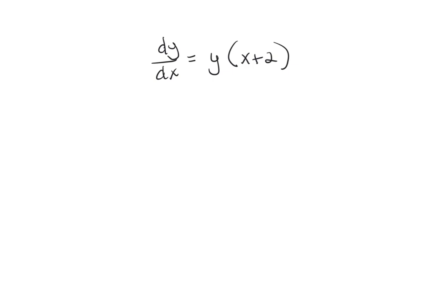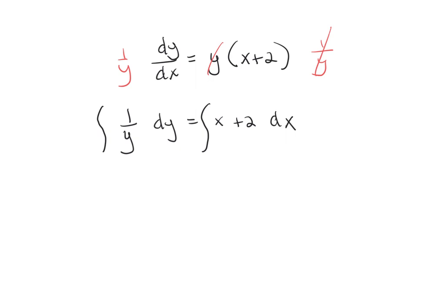We want to separate those variables. Move the y to the left by dividing by y, which is the same as multiplying both sides by 1 over y. Then multiply both sides by dx as well. So we get 1 over y dy equals x plus 2 dx. Taking the integral of both sides: the antiderivative of 1 over y is the natural log of the absolute value of y, plus c, equals x squared over 2 plus 2x plus c.